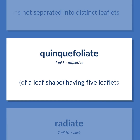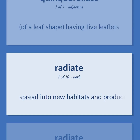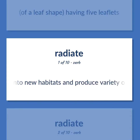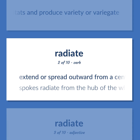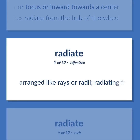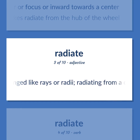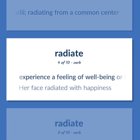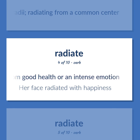Of a leaf shape: having five leaflets. Radiate: Spread into new habitats and produce variety or variegate. Extend or spread outward from a center or focus, or inward towards a center — spokes radiate from the hub of the wheel. Arrange like rays or radii, radiating from a common center. Experience a feeling of well-being or happiness, as from good health or an intense emotion — her face radiated with happiness.